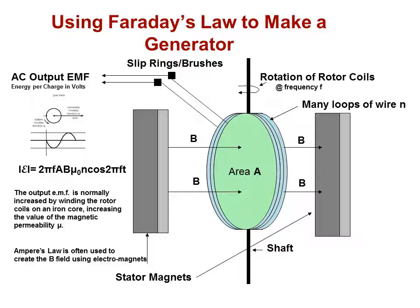The area becomes, when the area is in line with the magnetic field, you get no EMF. And when it's perpendicular to it, in other words when you have the maximum number of B lines through the area, then you get a maximum EMF. So Ampere's law is often used to create the B field using electromagnets. So even though we've shown fixed permanent magnets here, in most generators they're actually electromagnets.